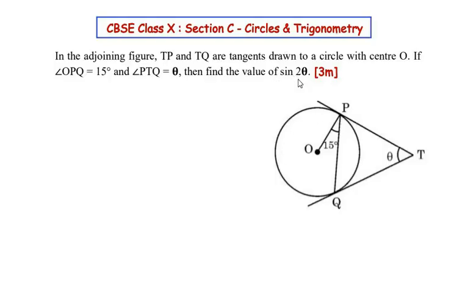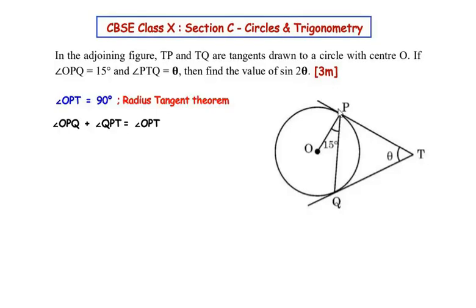To begin with, let us consider the radius OP and the tangent TP. Remember that the radius always makes a 90-degree angle with the tangent touching it. Here OP is the radius and TP is a tangent touching at point P, so angle OPT will be equal to 90 degrees. This is by the radius-tangent theorem.